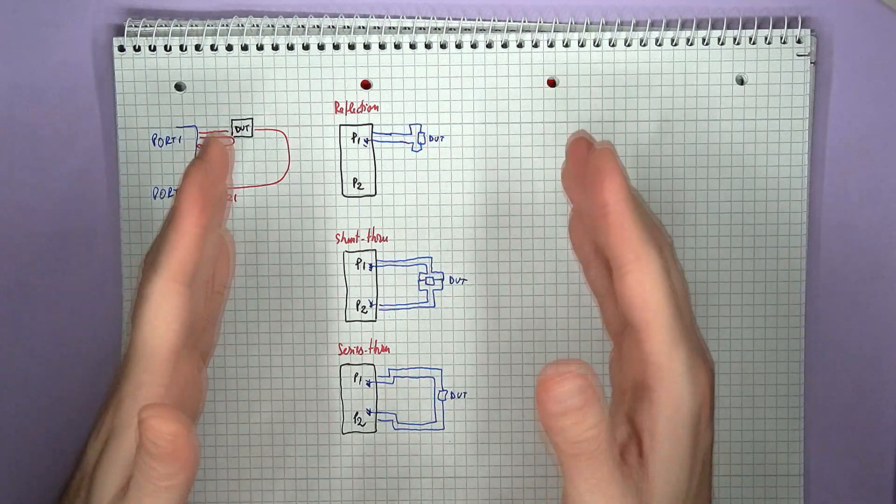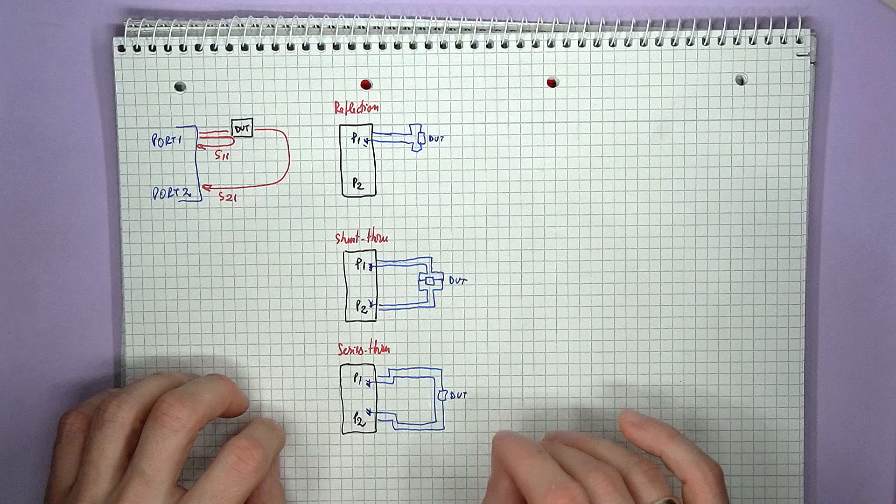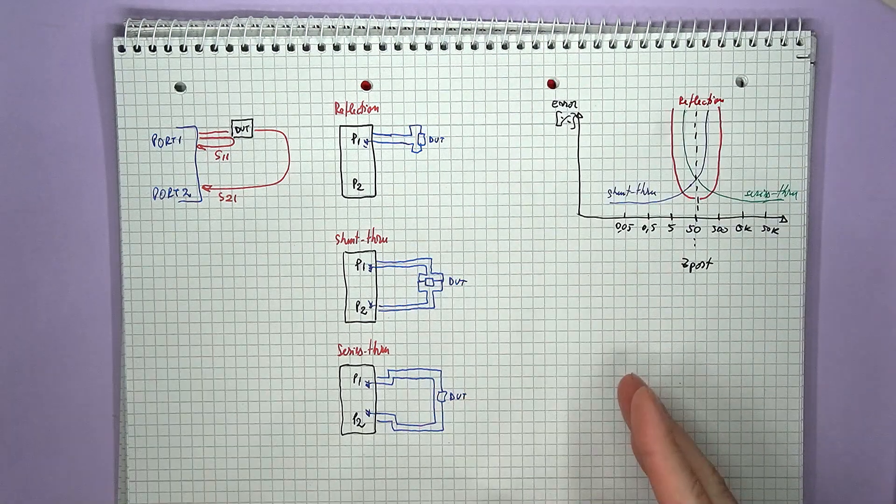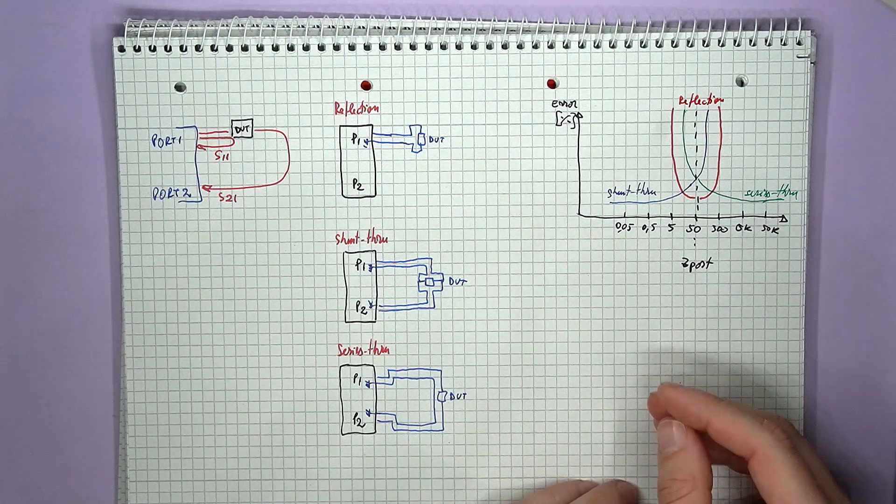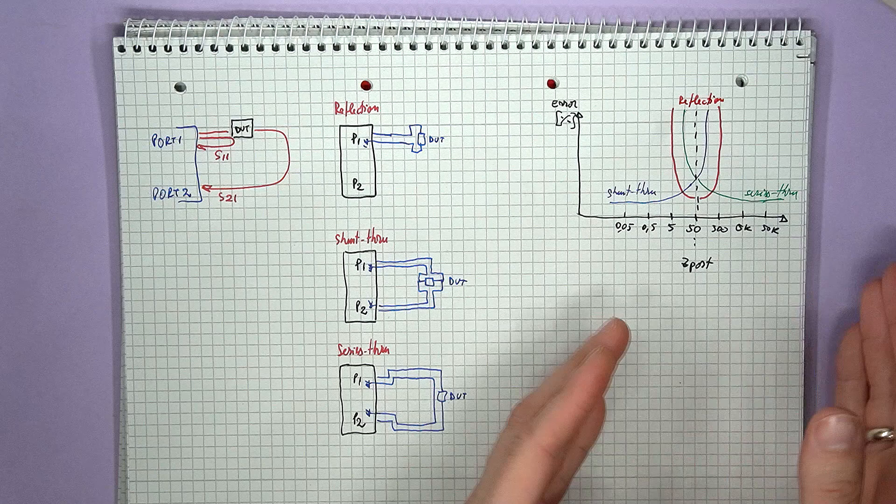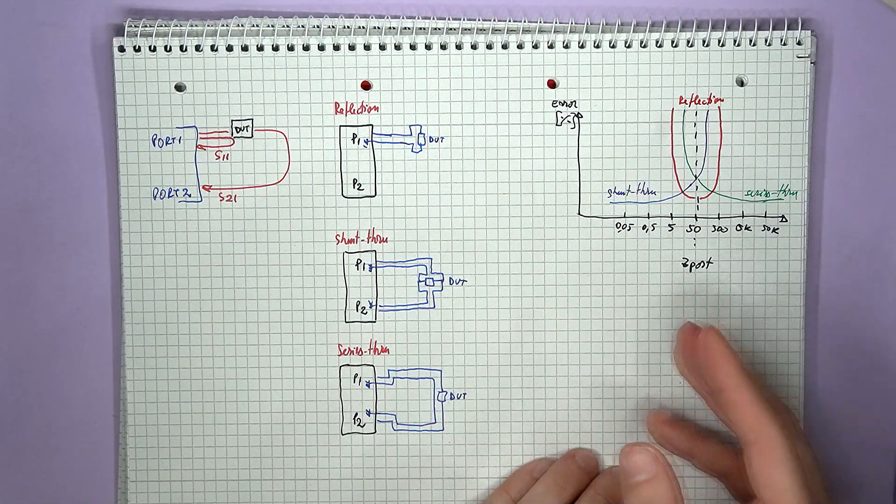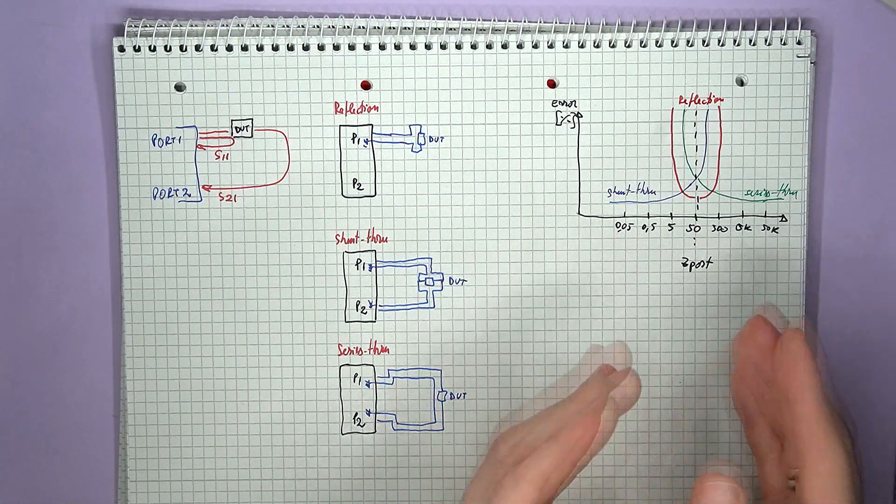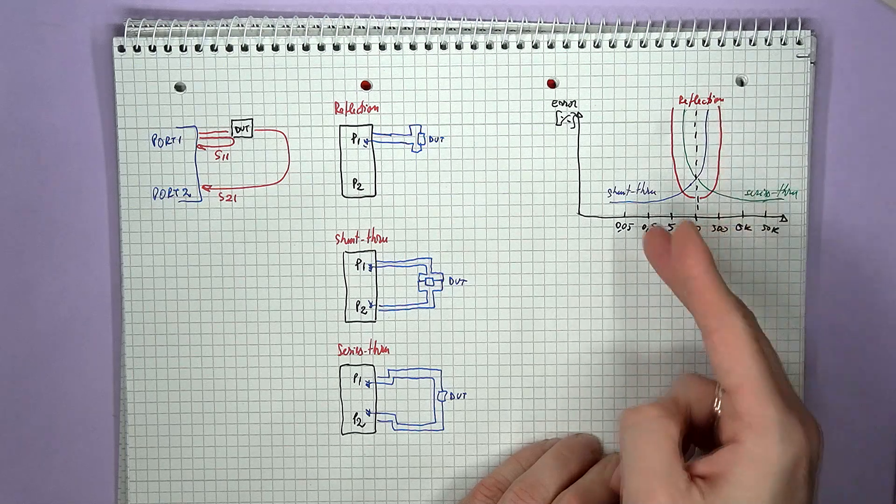Now although all three of these methods work, the best method for your particular needs is however dependent on the exact impedance of the tested component. So starting from the port impedance, 50 ohm for most equipment, the impedance range, higher and lower, can be divided into three main regions. First, for values relatively close to 50 ohms, so the 5 to 500 ohm range, these are best covered by the single port reflection method.